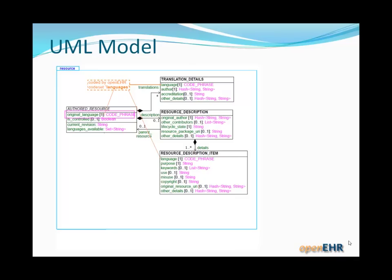For example, we have the original language, which is a code phrase. We have information about each translation if there are translations in the archetype — so which language, the author, accreditation information, and other details.